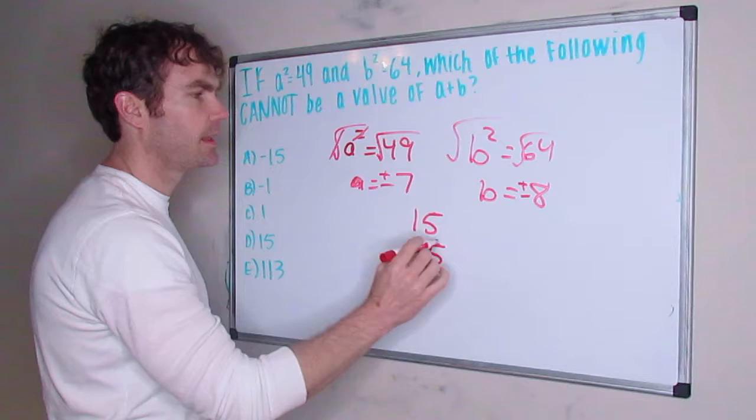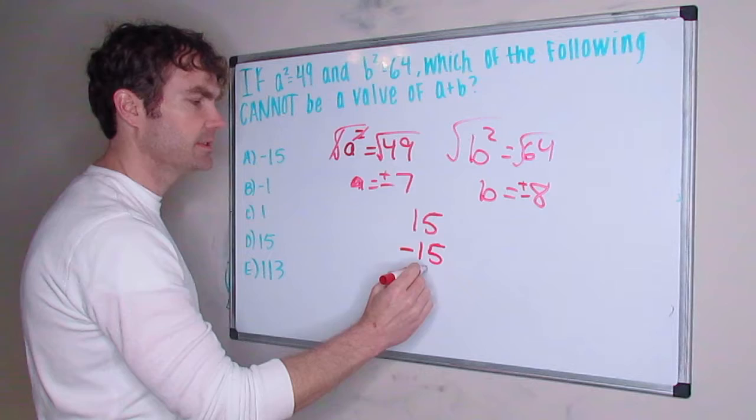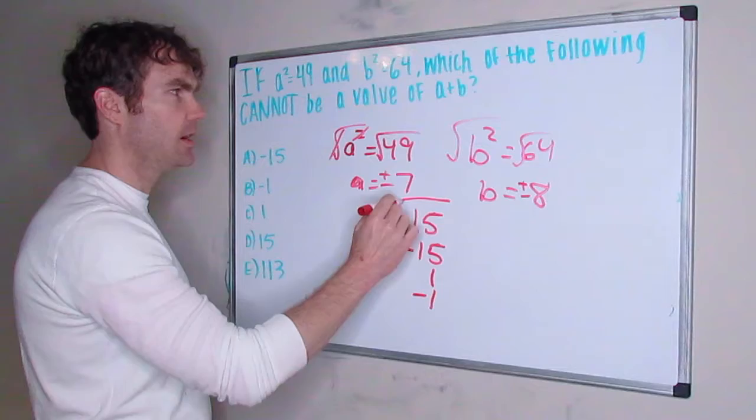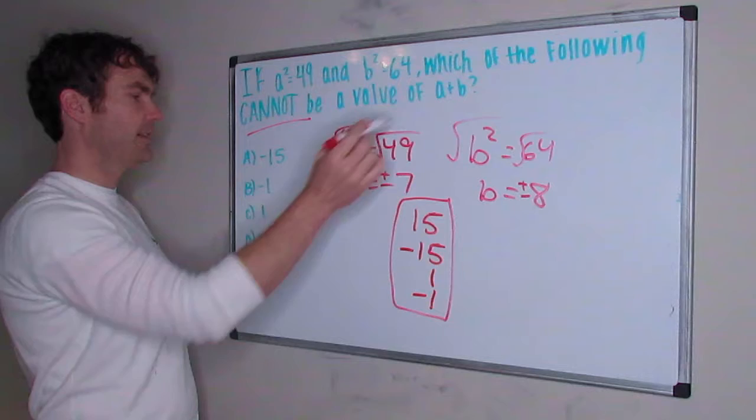Positive 8 plus negative 7 would be 8 minus 7, so that's 1. And negative 7 plus positive 8 is going to be minus 1. So these are all the possible values.